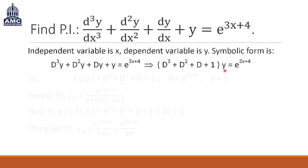Now we identify what is our f(D), what is our R and what is a. So what we get as f(D) is the left hand side, the thing in the bracket.